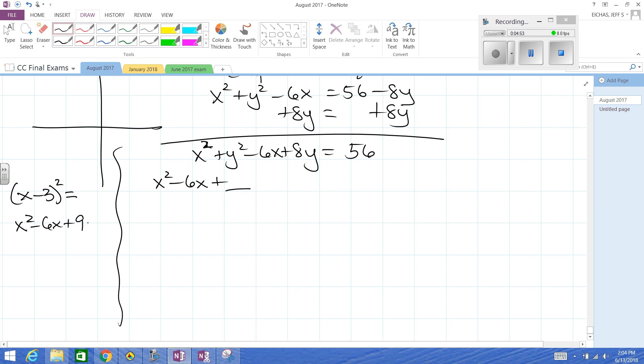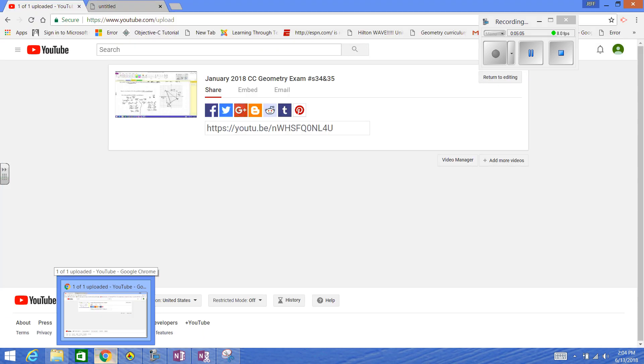You can test out a bunch of them. Y plus 4 squared is going to be Y squared plus 8Y plus 16. Knowing what these turn into is critical to completing the square.